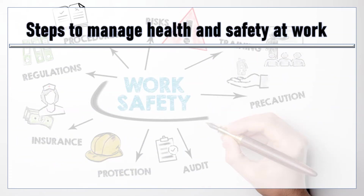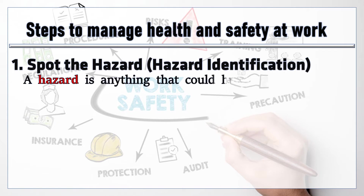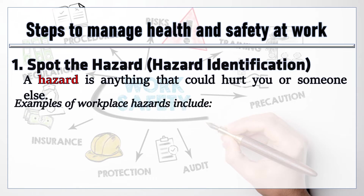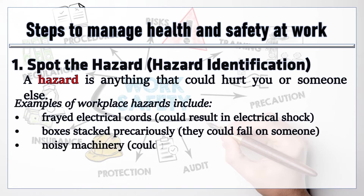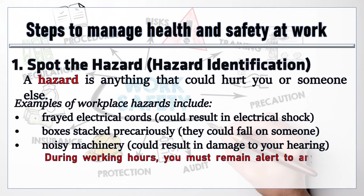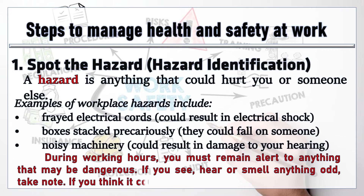There are three steps to manage health and safety at work. 1. Spot the Hazard — Hazard Identification. A hazard is anything that could hurt you or someone else. Examples of workplace hazards include: frayed electrical cords, which could result in electrical shock; boxes stacked precariously, which could fall on someone; and noisy machinery, which could result in damage to your hearing. During working hours, you must remain alert to anything that may be dangerous. If you see, hear or smell anything odd, take note. If you think it could be a hazard, tell someone.